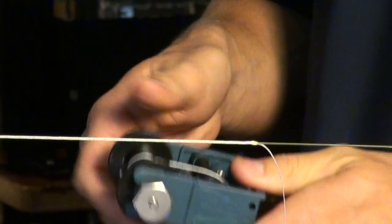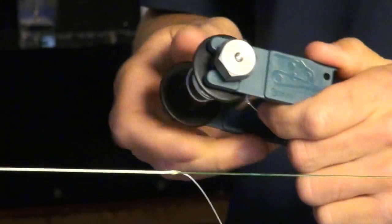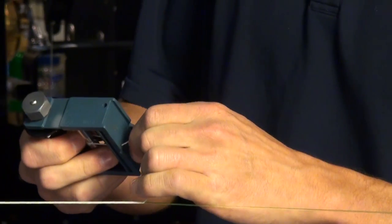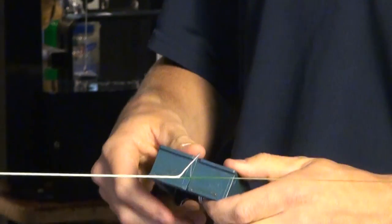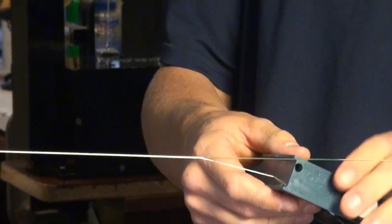I'm going to feed this tag end onto this bobbin here. And you can use any bobbin. You don't have to use anything too fancy. Any bobbin will work. Some of the splicing kits now have a bobbin included and they work very well too.